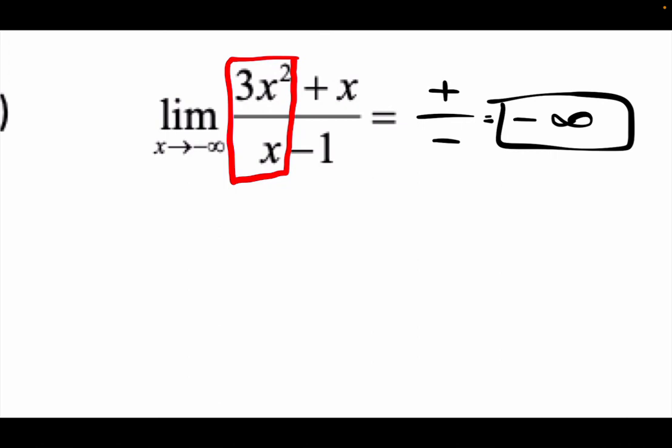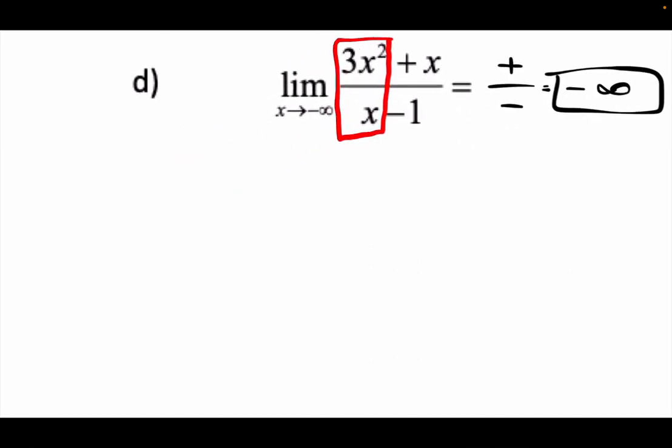Some people ask: what happens with the +x and the -1 terms — why don't we care about those? Well, these are the big dogs driving the bus — they determine how big or small the result is. Think of the smallest number you can think of: negative a billion. Then I subtract one. Does that do anything to it? No. Is there a difference between a billion dollars and a billion dollars and one? That's why we only care about the degrees.